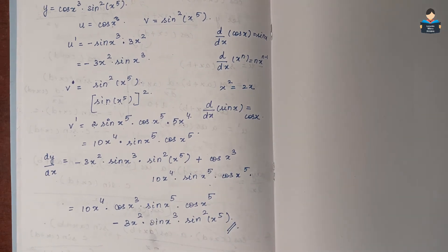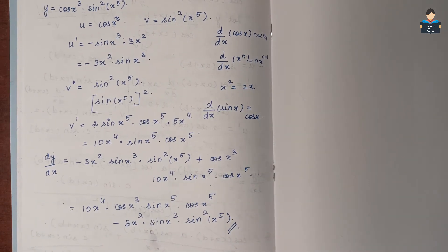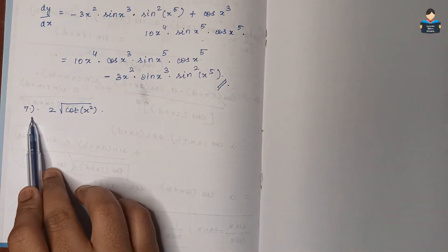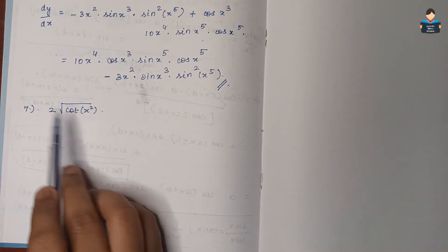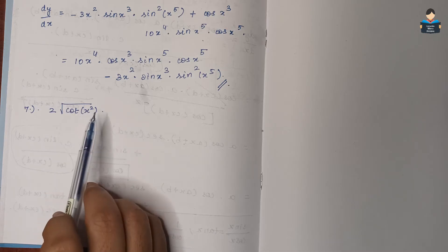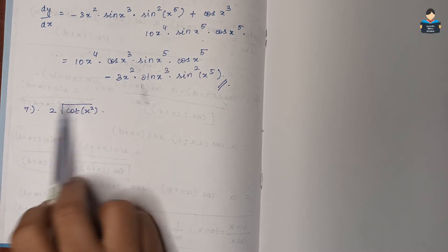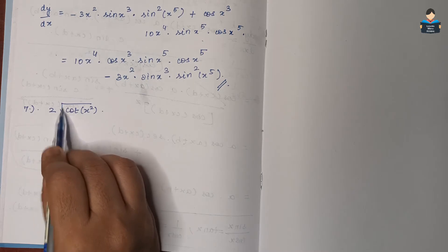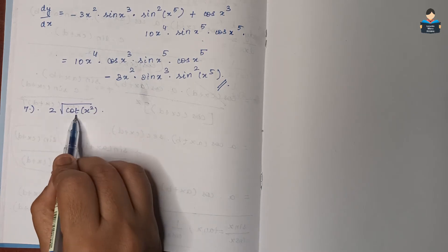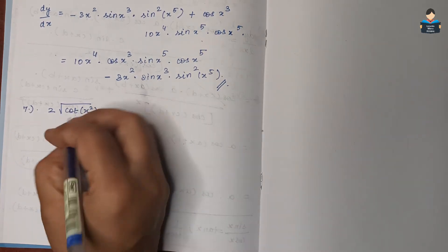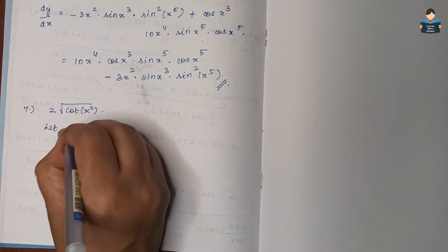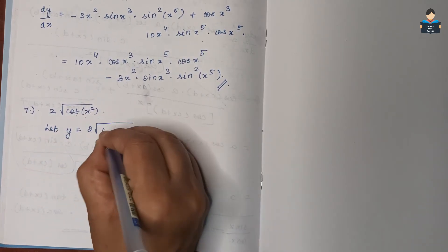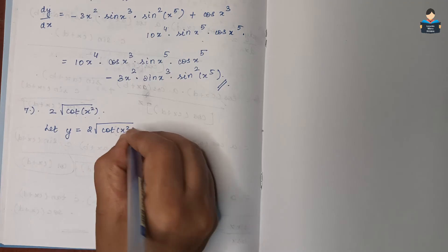Next, question number 7. Differentiate the function with respect to x. The function is 2 times the square root of cot(x²). Let y equal to 2√(cot(x²)).